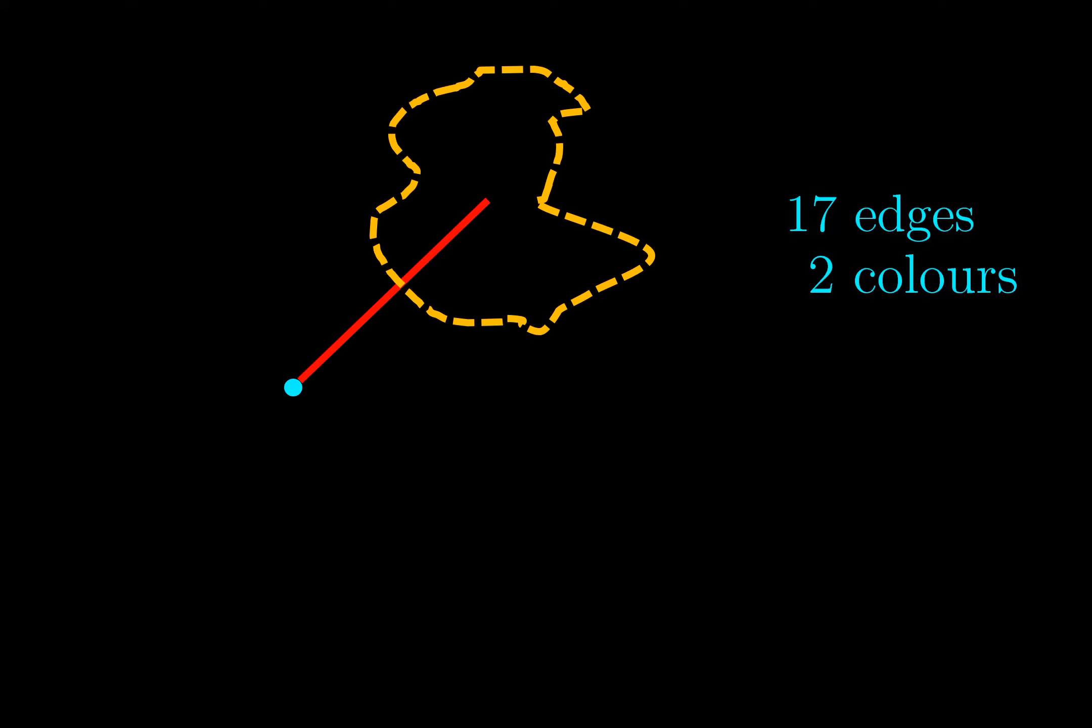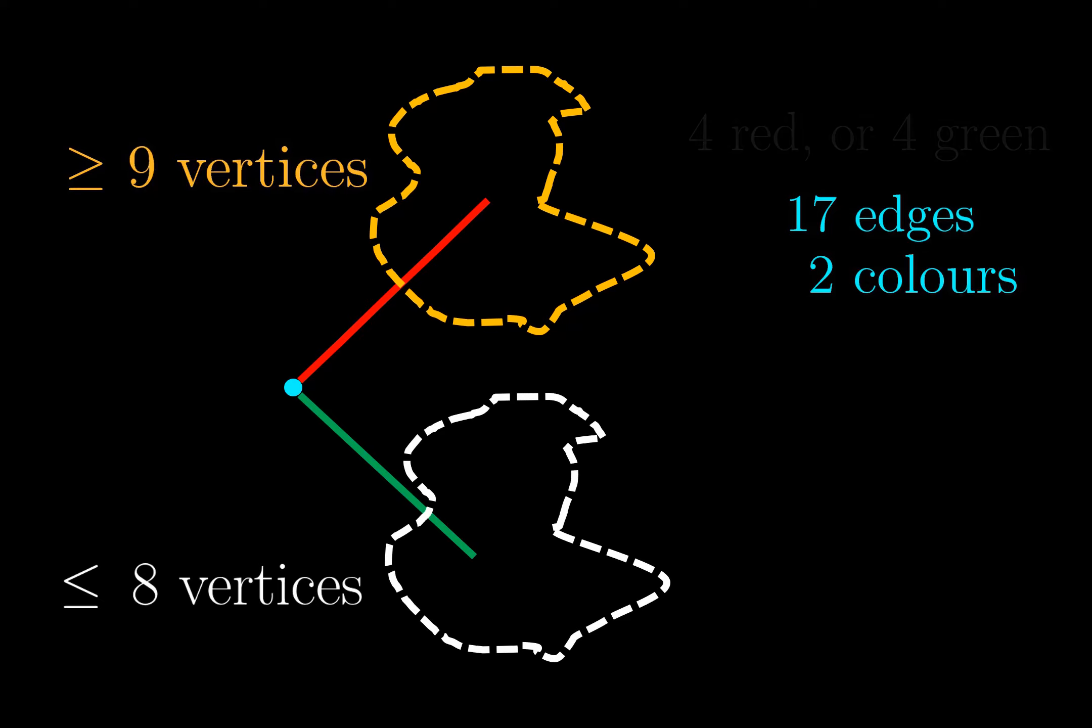To prove that, we first consider a graph with 18 vertices. And similarly, we consider a particular vertex and its connections with other vertices. Now there are 17 edges connected to this vertex, and there are only 2 colors available. So one color must appear at least 9 times. Assume that color is red. Since we want to guarantee that there is either 4 vertices connected in red, or 4 vertices connected in green, this amounts to proving that we can guarantee 3 vertices connected in red, or 4 vertices connected in green, in these 9 vertices.